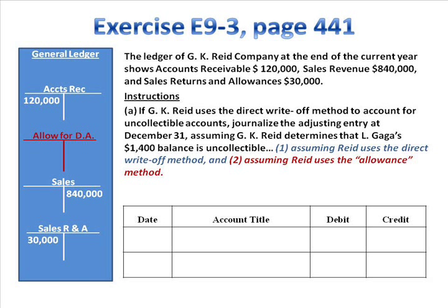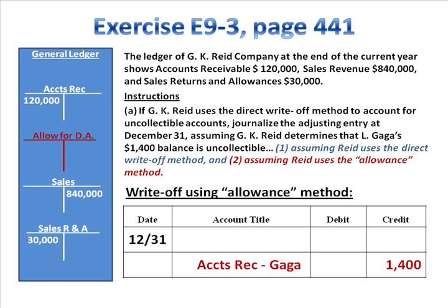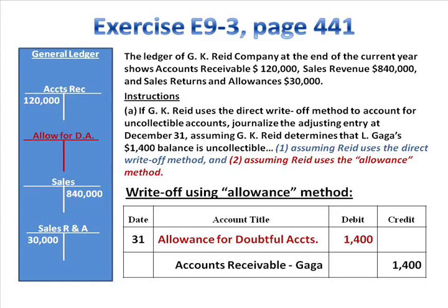To provide a contrast, let's also consider what entry we would make if we wrote off an account under the allowance method. If we were using the allowance method, we would credit accounts receivable — the same as before. The distinguishing feature between the two methods is what you debit. Under the allowance method, you debit the allowance account. We made that provision, that estimate ahead of time. We're debiting allowance for doubtful accounts and crediting accounts receivable for the amount of the customer's account we don't expect to collect.